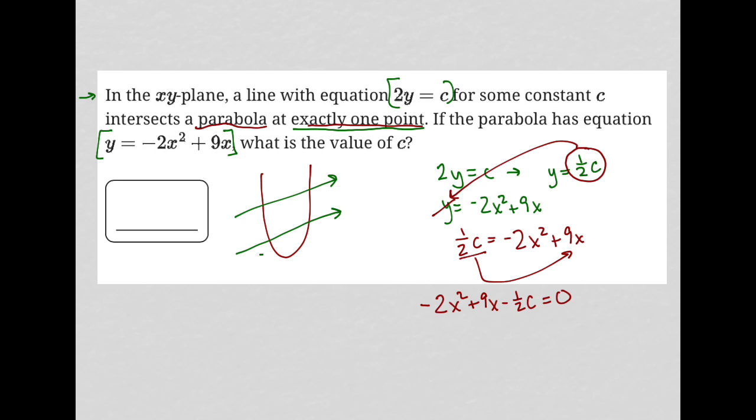In which case, that means I can use the discriminant, which is b² - 4ac. And I know that b² - 4ac in this case is equal to zero, because there's only a single solution. There's only one place where the line y = ½c intersects the parabola y = -2x² + 9x.